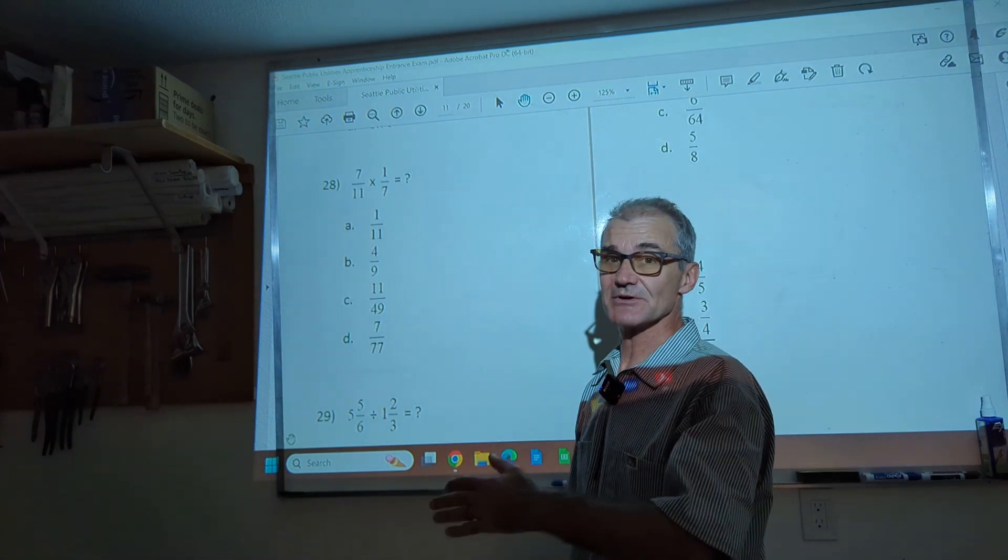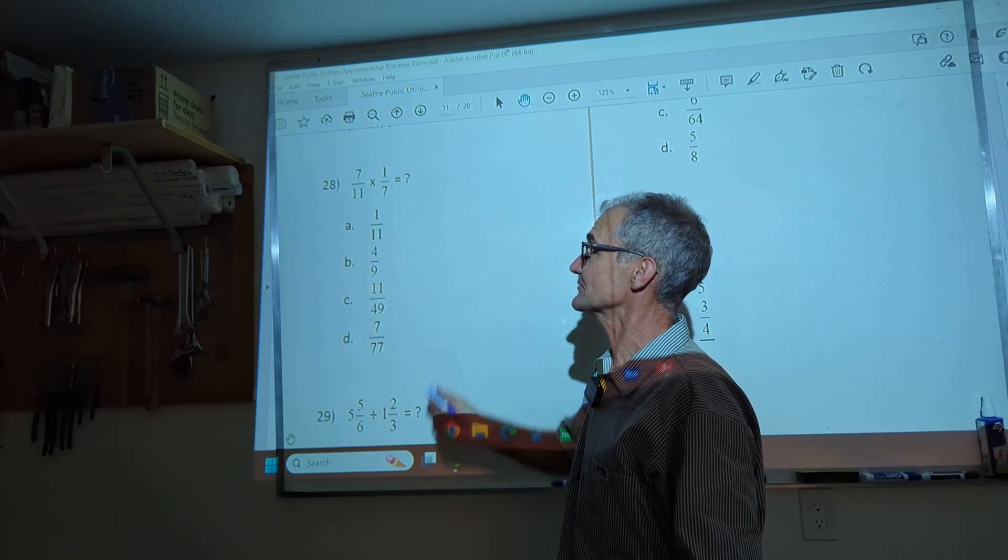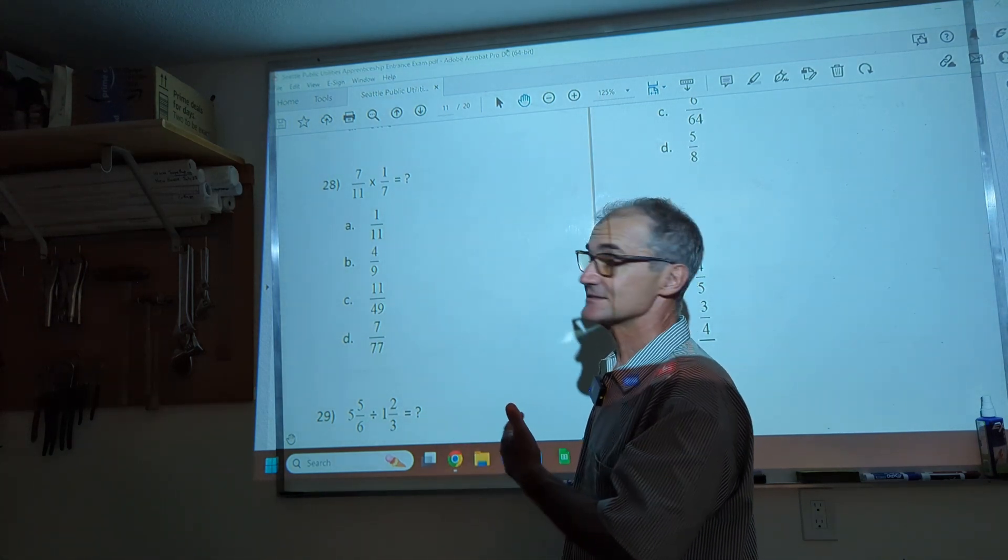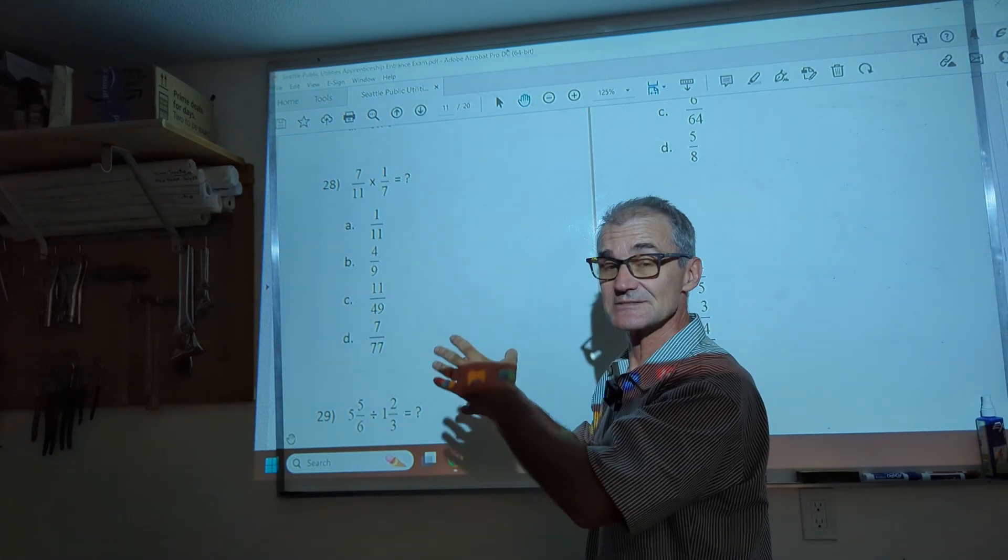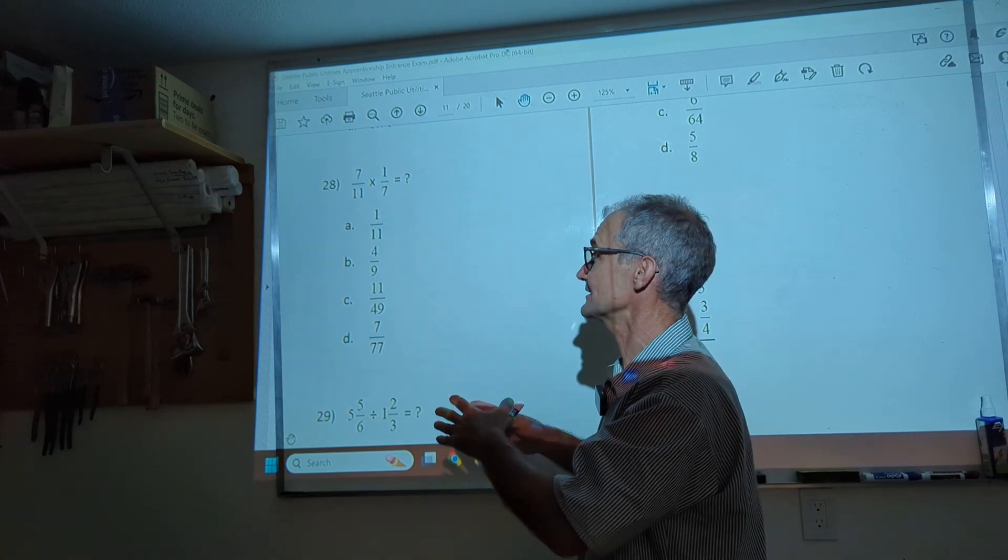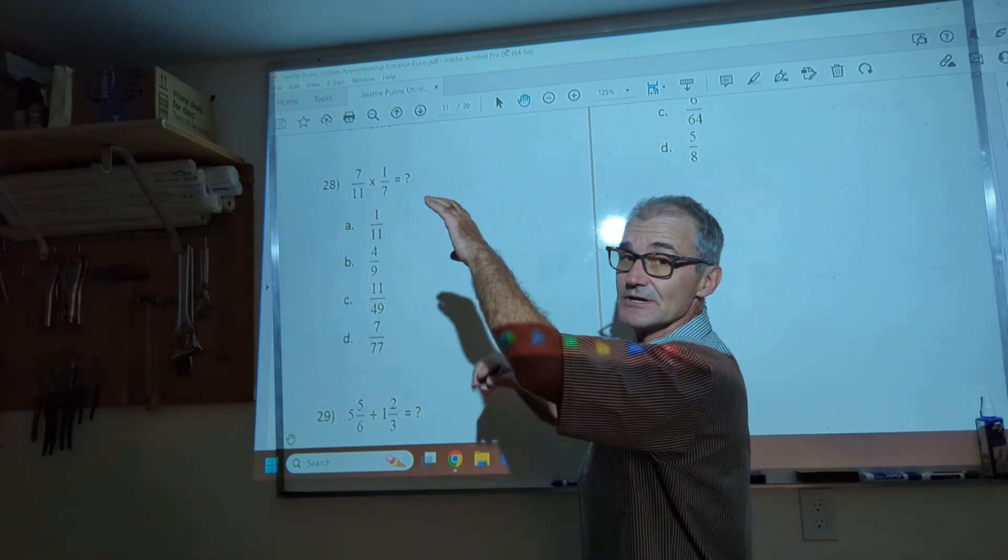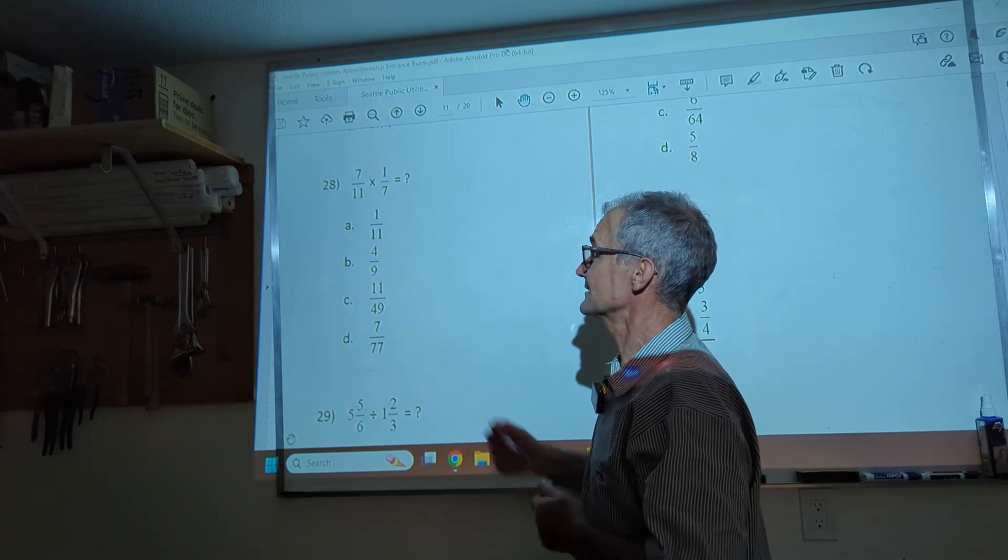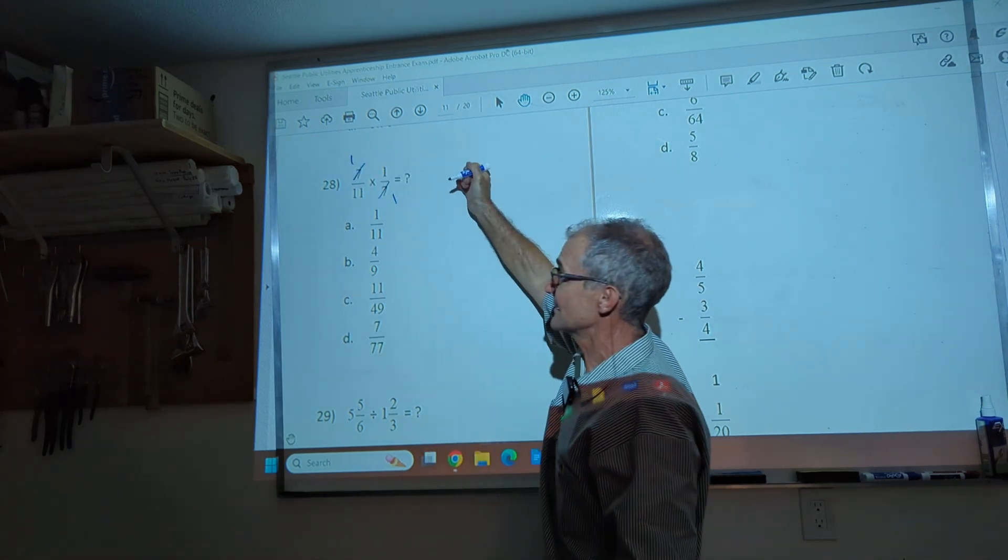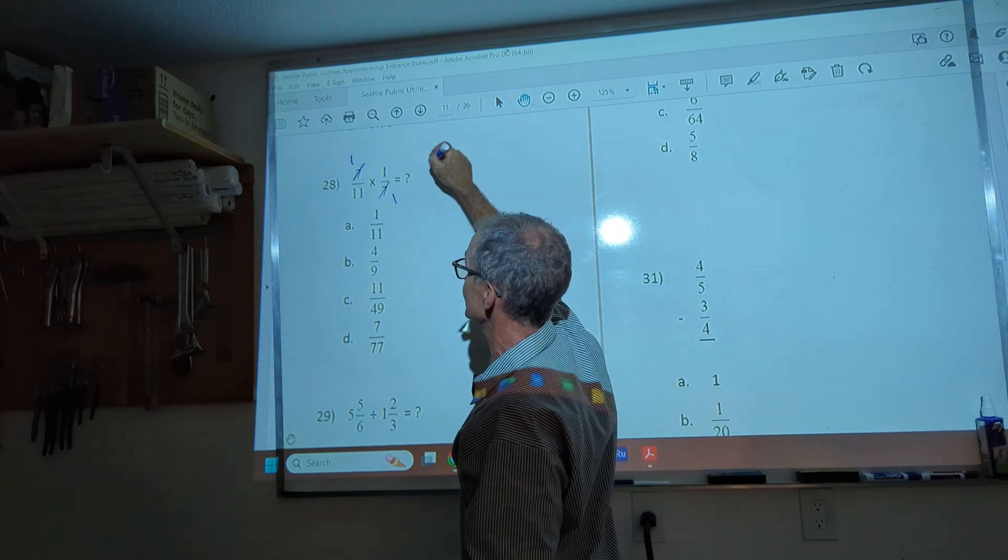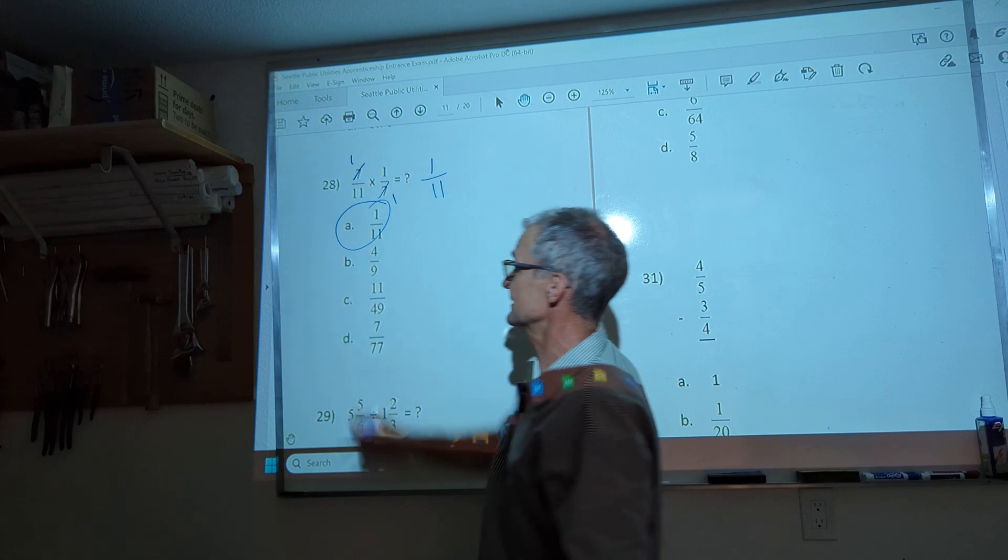Problem number 28. Again, pause the video. Do the problem first. Watch how I do it. We're talking about fractions and we're multiplying fractions. Multiplying fractions is pretty easy. You multiply across the top, you multiply across the bottom. It's adding and subtracting fractions that's more difficult with the common denominator. Before I multiply, I can reduce if there's anything in common in the numerator at the top and the denominator. So I can see right here, a 7 goes into here one time, a 7 goes into here one time. I'm all done reducing. 1 times 1 is 1. Multiply across the bottom and I have 1/11. Answer A right there.